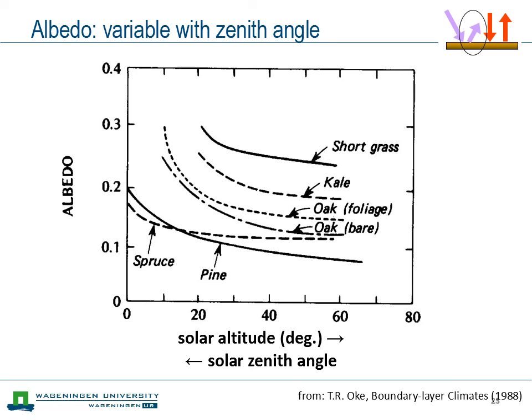On a sunny day it's not the time of day that matters but the solar zenith angle. This figure shows for different surfaces how albedo depends on solar zenith angle — the axis shows solar altitude, which is the complementary angle. At low solar altitude, close to sunrise and sunset, the albedo is high. For tall surfaces like spruce and pine forests, the albedo is quite low at about 10%, whereas for short grass the typical value is about 20–25%. There's a clear dependence: high albedo at high solar zenith angle, and low albedo when the Sun is more overhead.